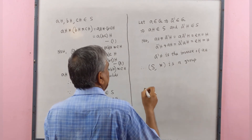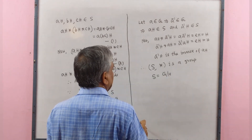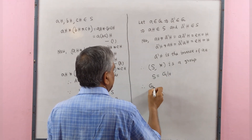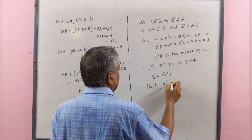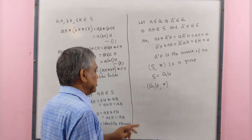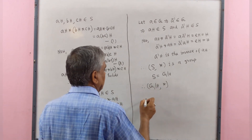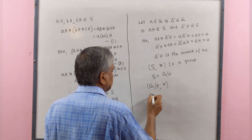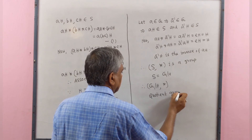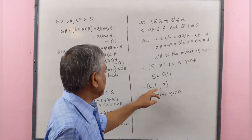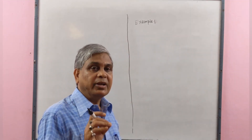Therefore, the binary operation star fulfils the properties of closure law, associative law, existence of identity element, and existence of inverse. Therefore S with star is a group. We give the name of S as G by H. Therefore G by H with this binary operation is a group, and this G by H is called the quotient group formed by normal subgroup H in group G.